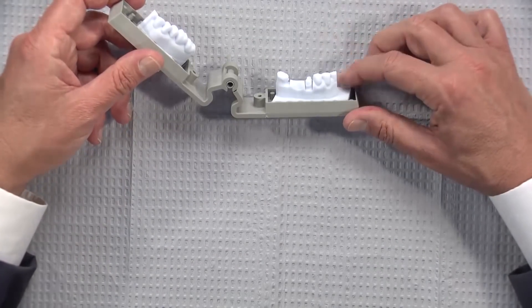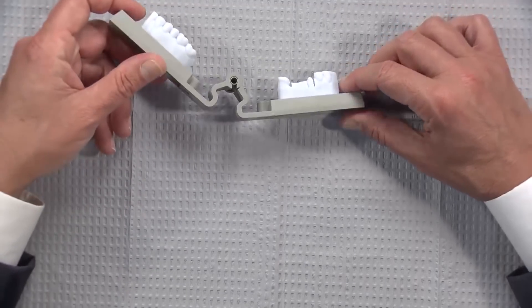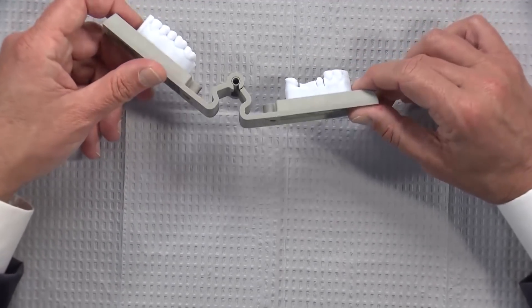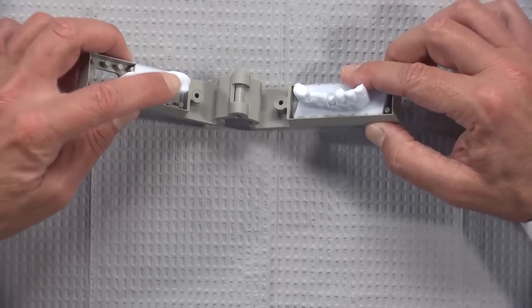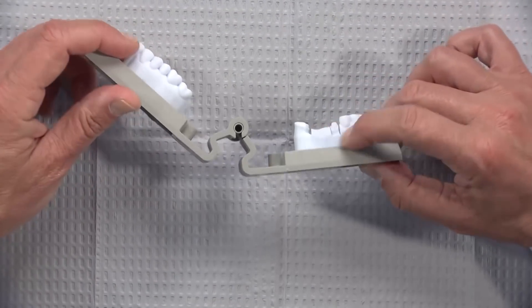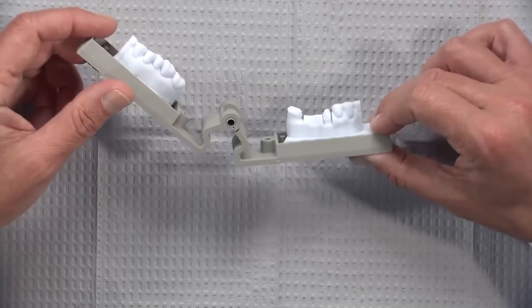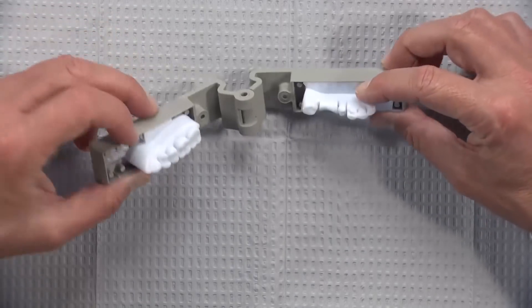This is what an SLA model looks like that you would receive from a 3M trusted partner. This is printed on a 3D printer. Unlike maybe the Cadent model if you've seen those, they're kind of big and heavy models that are milled from polyurethane.